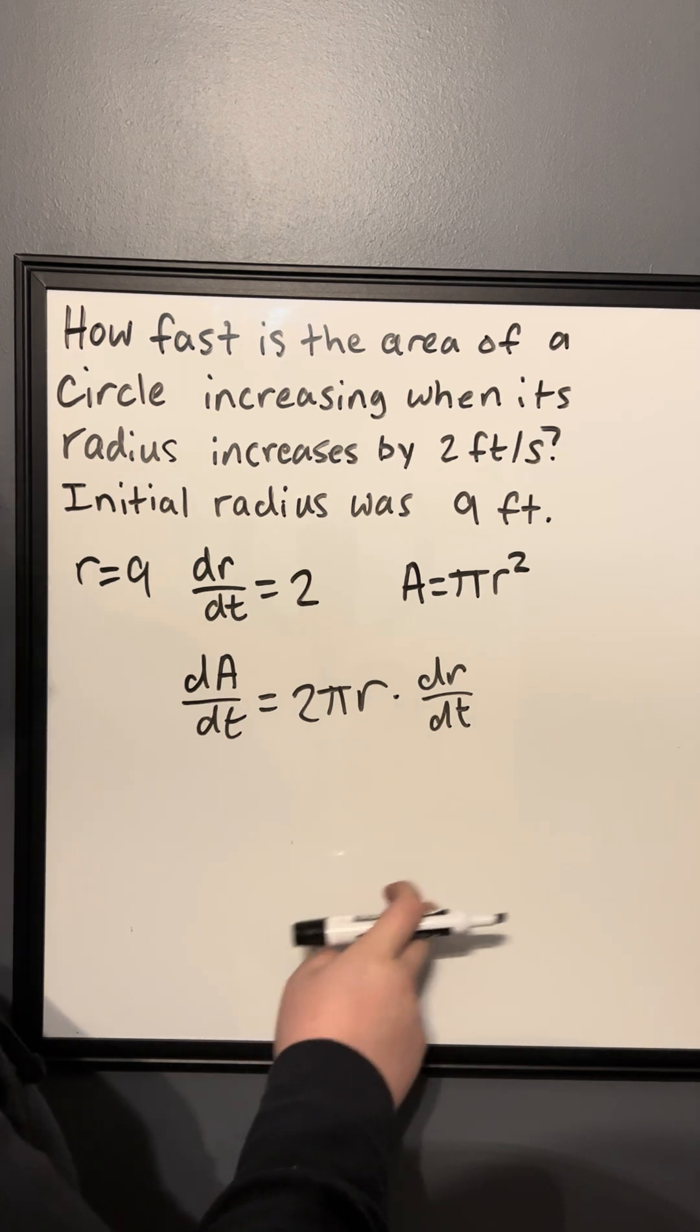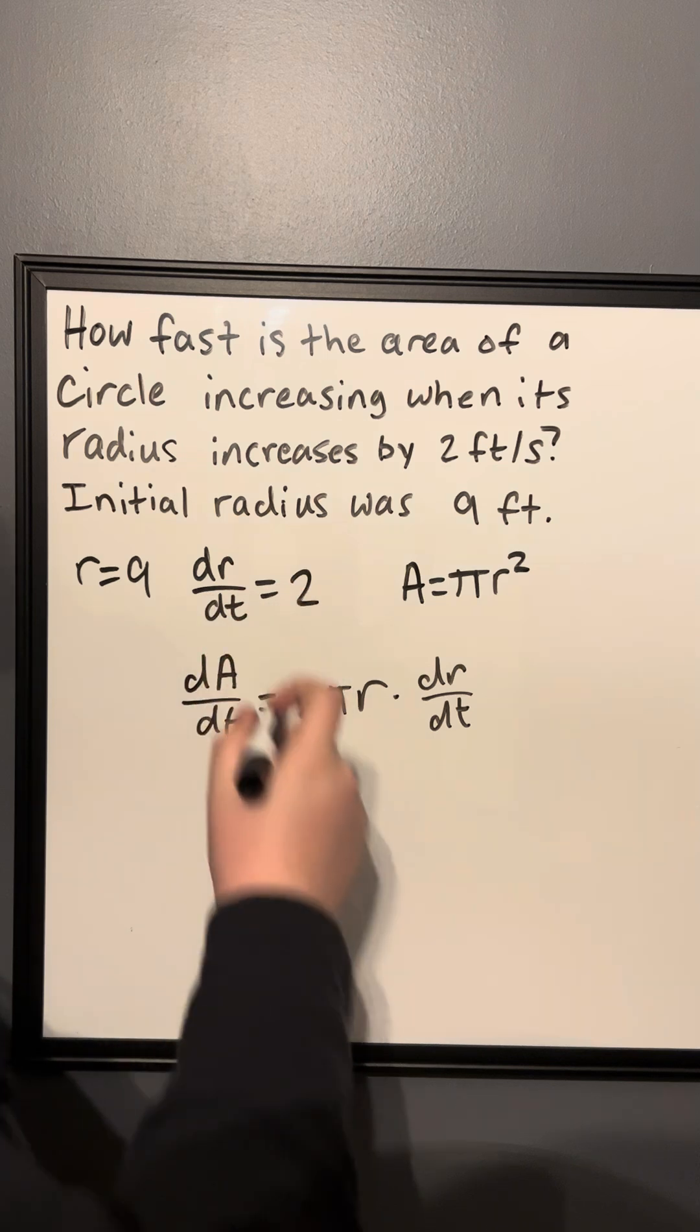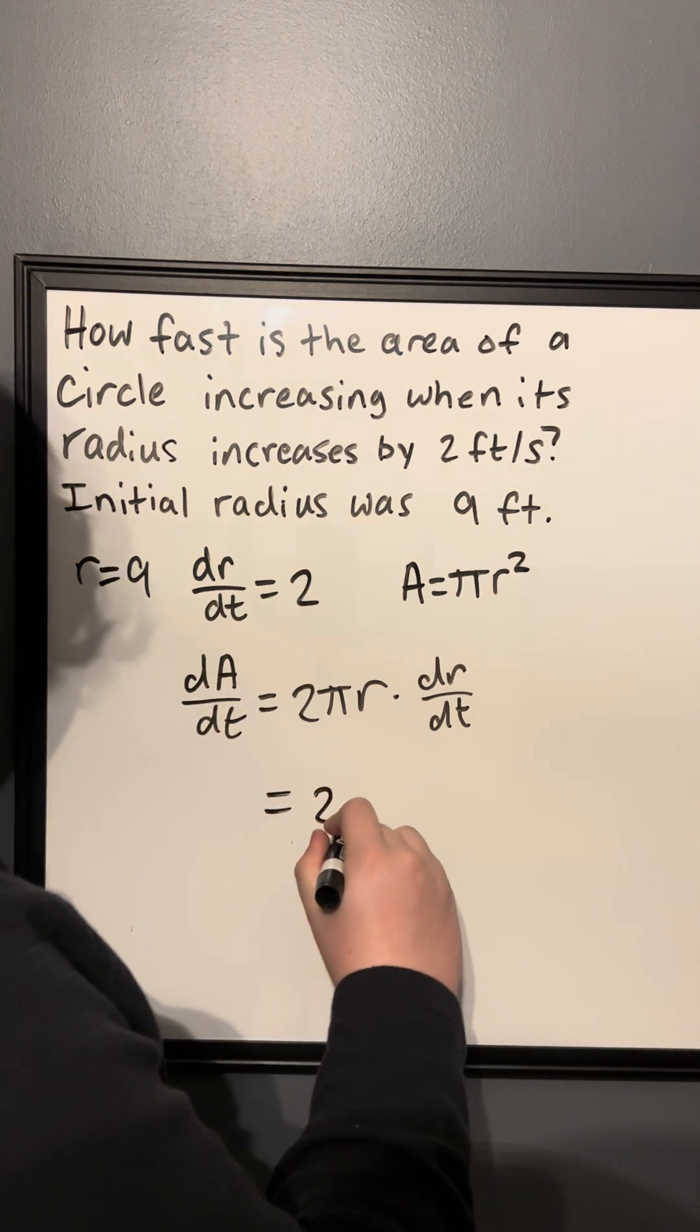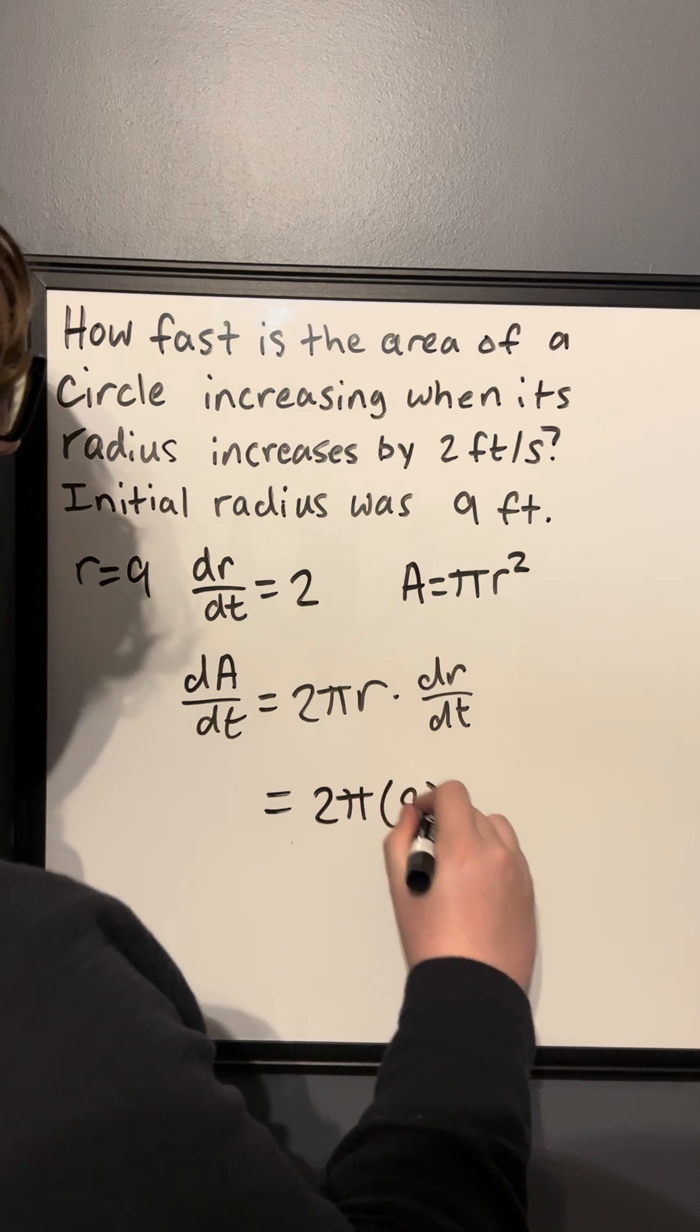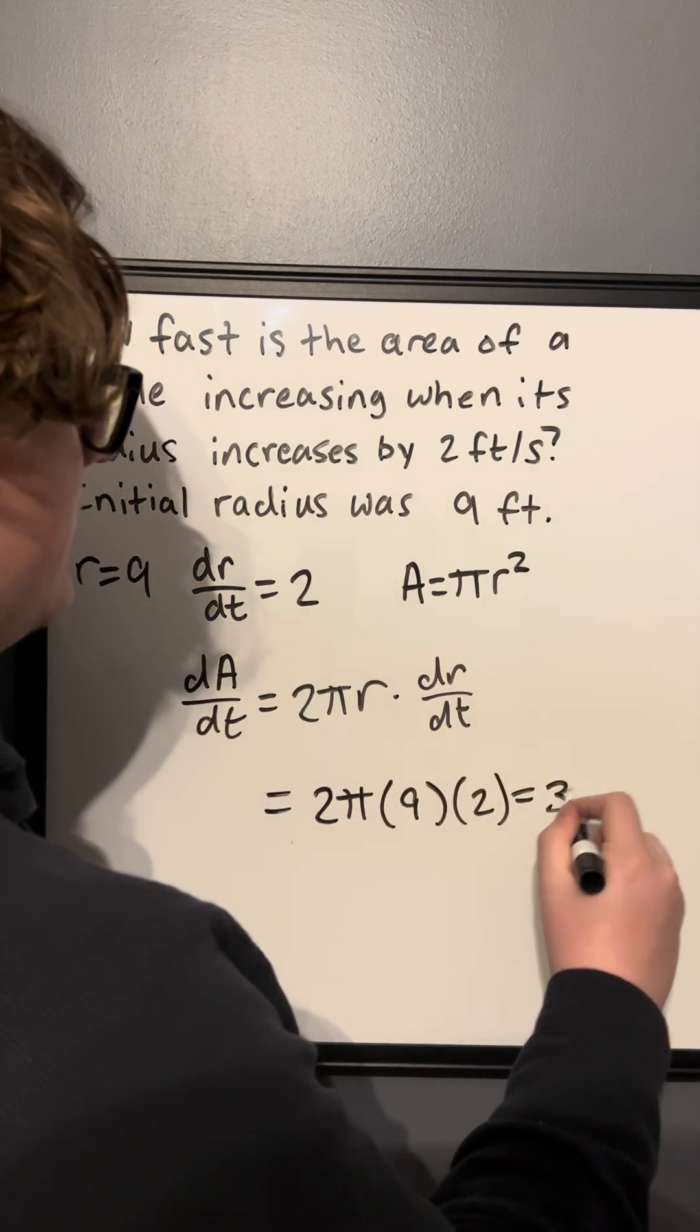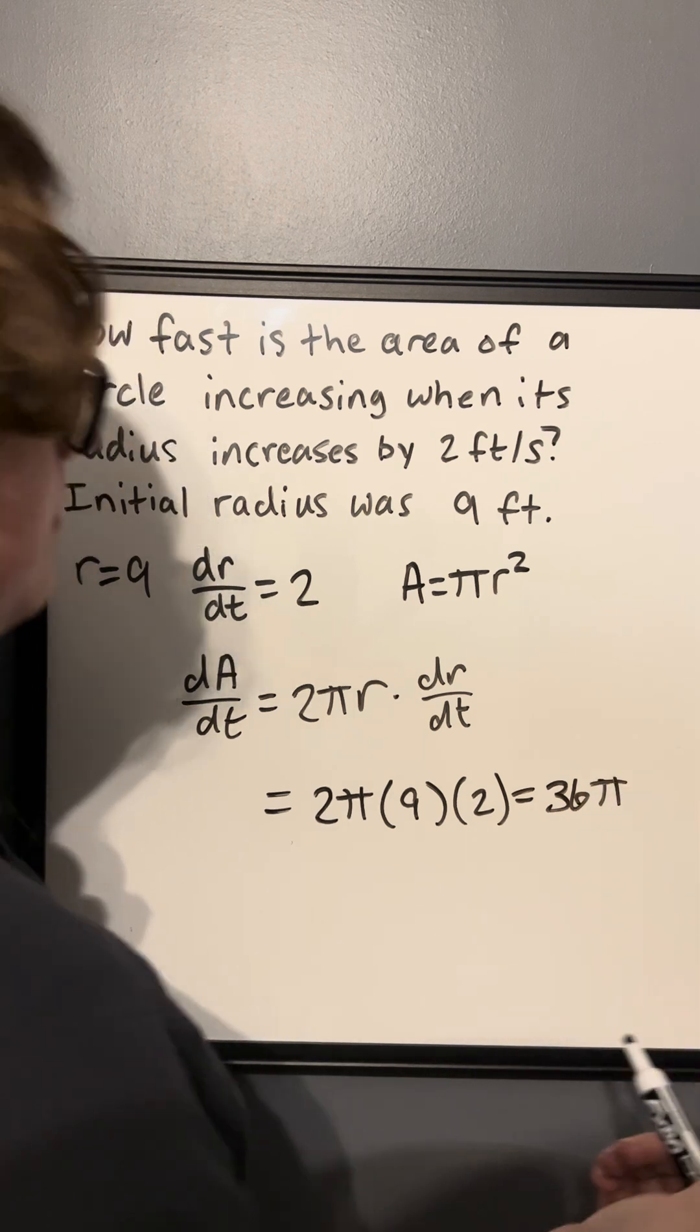But now the nice part about this is that we have everything that we need. We have r and we have dr/dt, so we're just going to go ahead and plug in. So the change in area is 2π times the radius, which is 9, times the change, which is another 2, which gives us 36π feet per second squared.